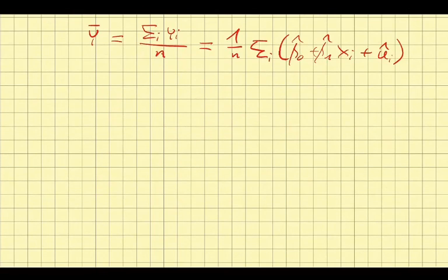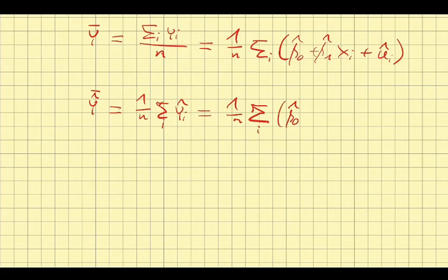Now, what we can also look at is the mean of the fitted values, which obviously the formula for the mean is the same. Then we can substitute in the sample regression function, which is nothing more than beta naught plus beta 1 xi. We can immediately see that there is only one difference in those two, and that's the residuals. So now we can think about, under what conditions are those two the same?